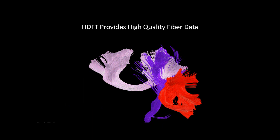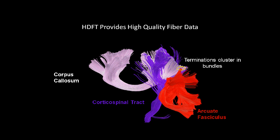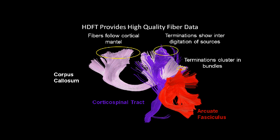The high definition tracking provides high quality fiber data. This shows three intersecting tracks: the white, the corpus callosum that connects the left and right hemispheres; the purple, the corticospinal track for motor control; and the red, the arcuate fasciculus that carries language information. Note the terminations clustered in bundles allowing identification of the drop point and what tissue is contacted. The fibers follow the cortical mantle showing its undulations, and the terminations show the interdigitation of the sources.